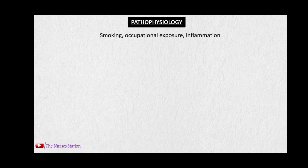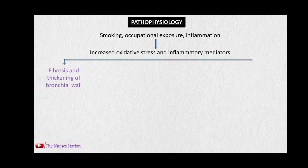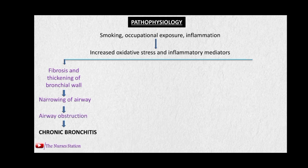Regarding pathophysiology: risk factors such as smoking, occupational exposure, and inflammation lead to increased oxidative stress and inflammatory mediators in the lungs. This causes fibrosis and thickening of the bronchial walls, leading to narrowing of the airway, resulting in airway obstruction and chronic bronchitis.